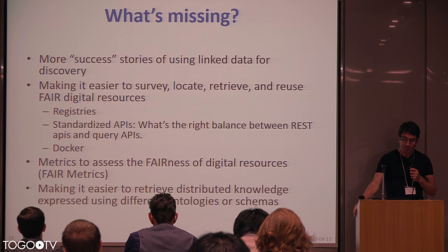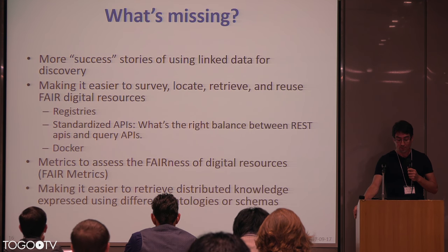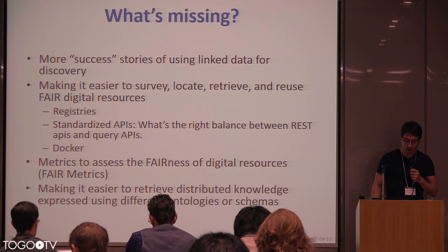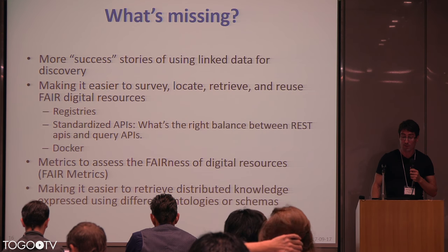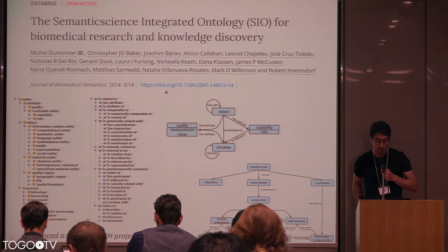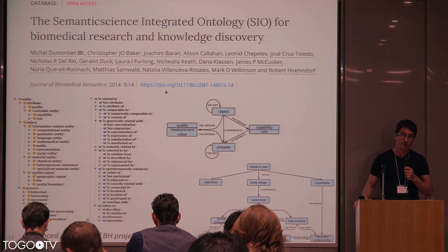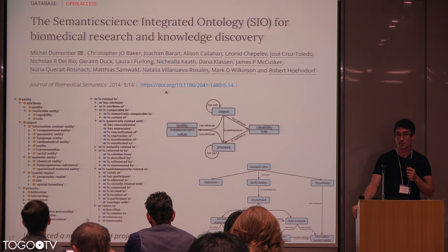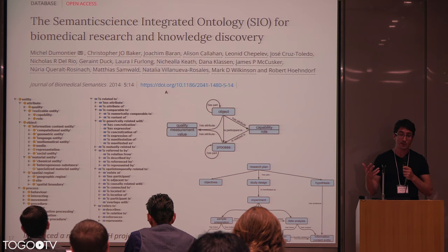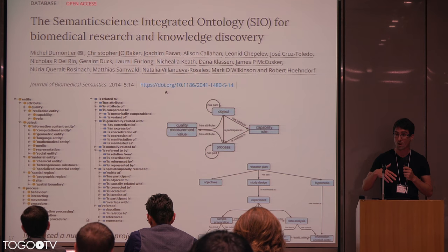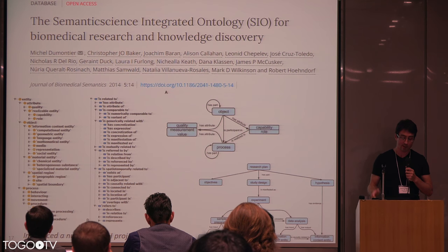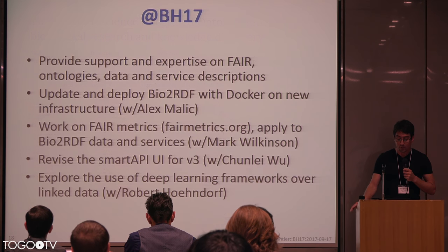Other challenges include dockerizing your content so it's easier for others to deploy, methods to assess the fairness of digital resources — so-called FAIR metrics, which Mark Wilkinson and I will be working on in this workshop — and ways to retrieve distributed knowledge expressed using different ontologies and schemas. To that end, we've been working on the Semantic Science Integrated Ontology, a high-level ontology for different concepts and relations that acts as semantic glue to connect APIs and datasets.